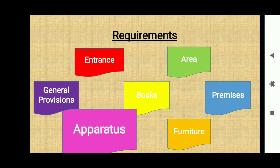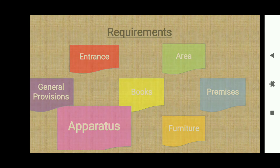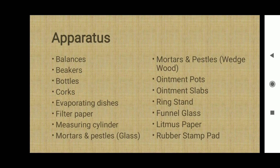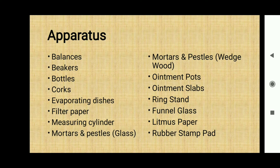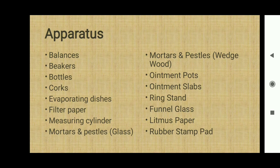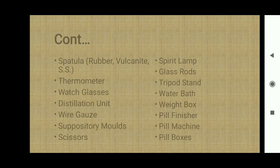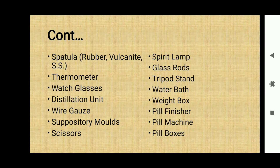The next requirement is apparatus. Various kinds of apparatus should be available in a pharmacy store, like balance, beaker, cork, filter paper, funnel, mortar and pestles, spatulas, suppository molds, water baths, pill boxes, weed box, tripod stand, glass rods, spirit lamps, etc.